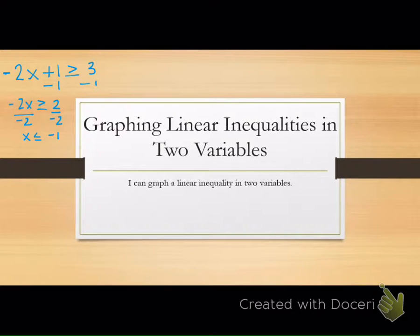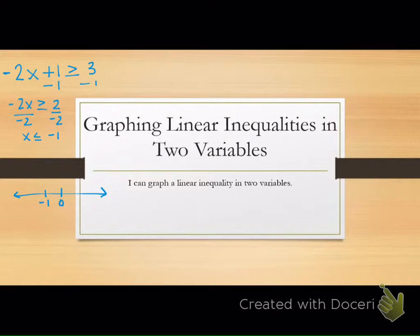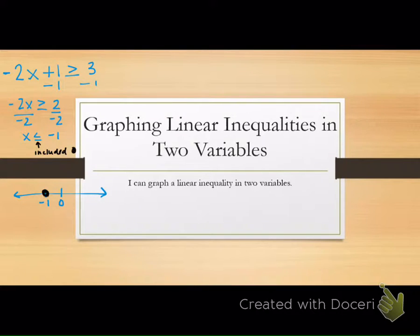Then I asked you to graph it. You put it on a number line because it's one variable — it's one-dimensional, so it only has one line. When we do two variables, it's going to go on a graph because it has x and y. We plotted negative 1 and had to talk about open and closed circles. Was this an open or a closed circle situation? This was a closed circle situation because the value is included.